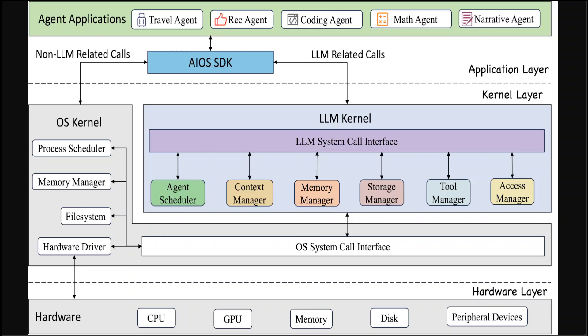At the very bottom we have the hardware layer. The hardware layer comprises the physical components of the system including the CPU, GPU, memory, disk, and peripheral devices. It is important to note that the LLM kernel system calls cannot directly interact with the hardware. Instead, these calls interface with the OS system calls, which in turn manage the hardware resources. This indirect interaction ensures a layer of abstraction and security, allowing the LLM kernel to leverage hardware capabilities without requiring direct hardware management, maintaining the system's integrity and efficiency.